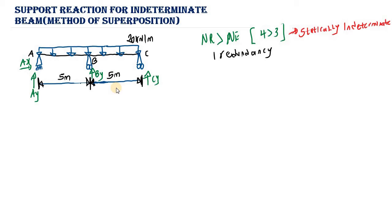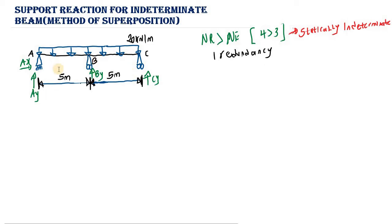Because we have one redundancy, we are going to use the method of superposition to calculate the four reactions. The first step is to identify the redundant. On this beam we have a pin support at A, a roller at B, and a roller at C. We ask: which reaction can I remove to make this beam statically determinate? If we remove the roller support at point B, we are left with the pin at A and roller at C, giving us three reactions — making the beam statically determinate.